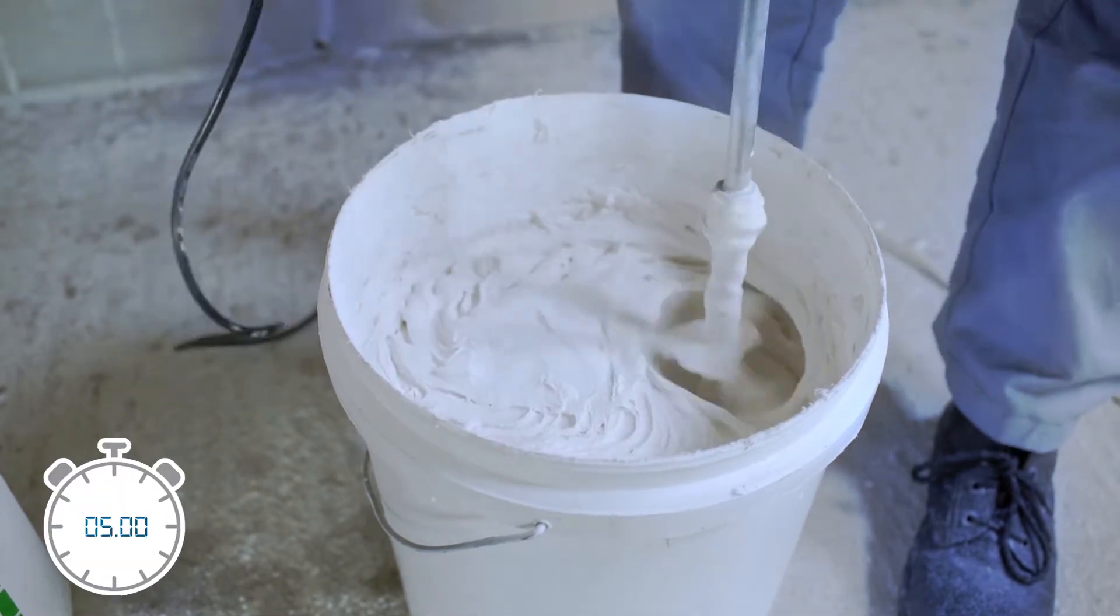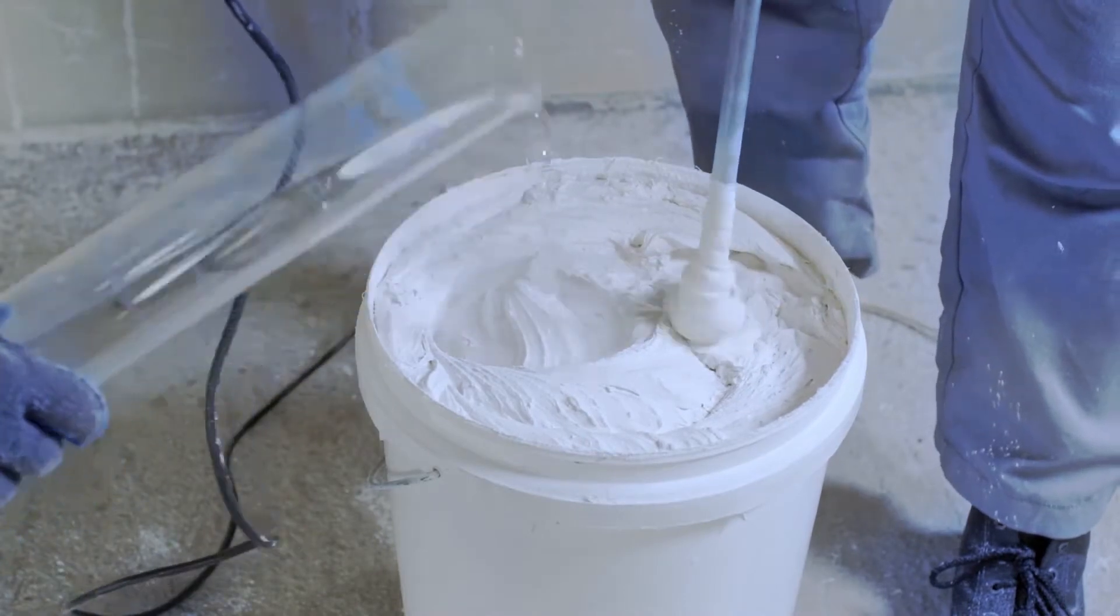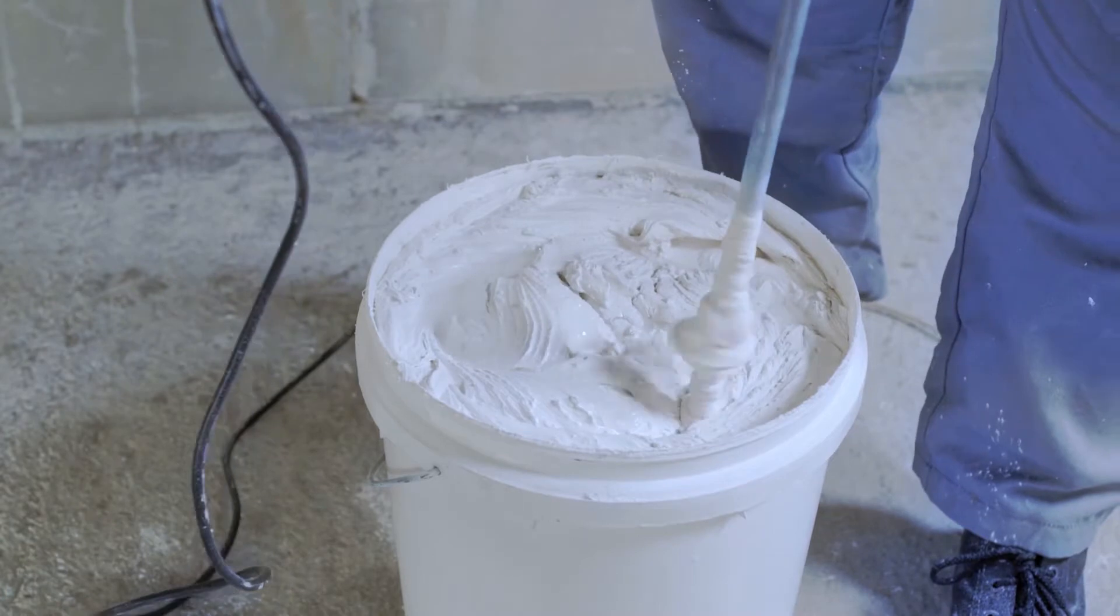Continue the mixing for 5 minutes to get a thick consistency. You may add up to 0.5 liters of water until you reach a consistency that you can work with.